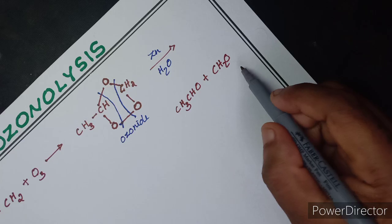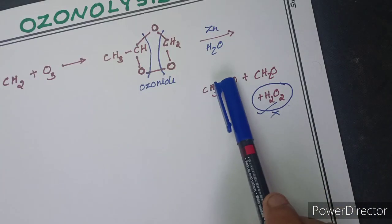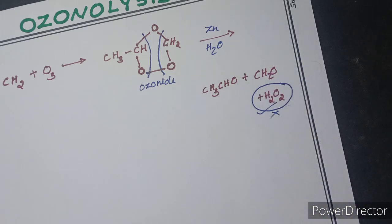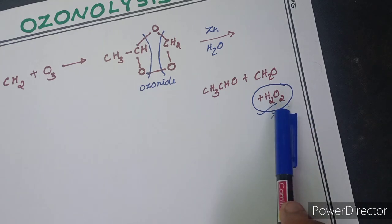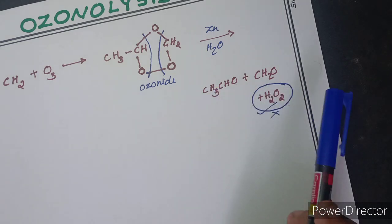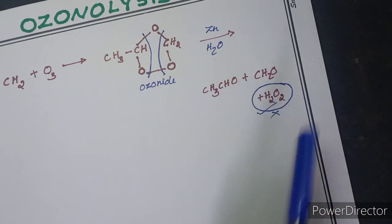We have some aldehyde. The ozonide gives us two aldehydes — we use aldehyde. This is the product: the product in the first half of the product.